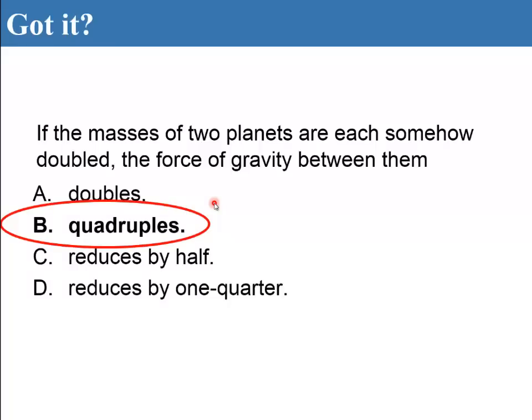Okay, so it's b quadruples. So the idea here is the force is G m1 times m2 over r squared, m1 goes up by a factor of 2, m2 goes up by a factor of 2, so the product m1 times m2 goes up by a factor of 4.